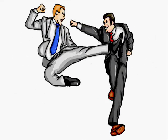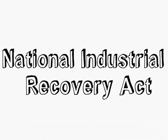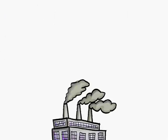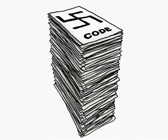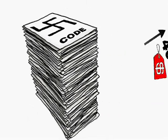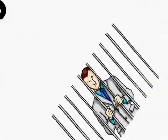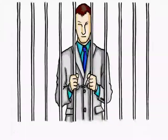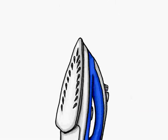Incorrectly thinking that too much competition is a problem, Roosevelt enacts the National Industrial Recovery Act, which forces industries into government-run monopolies and enacts hundreds of fascist-style regulatory codes, increasing the cost of doing business by an average of 40%. In fact, a man was put in jail for charging $0.35 instead of $0.40 to press a pair of pants.